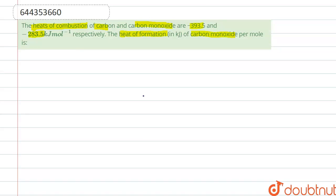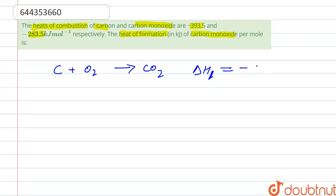Let us write the reaction of formation of carbon monoxide and carbon dioxide. When carbon reacts with oxygen it forms carbon dioxide. The heat of combustion is given — let's call it delta H1, which is minus 393.5 kilojoule per mole. This is equation 1.